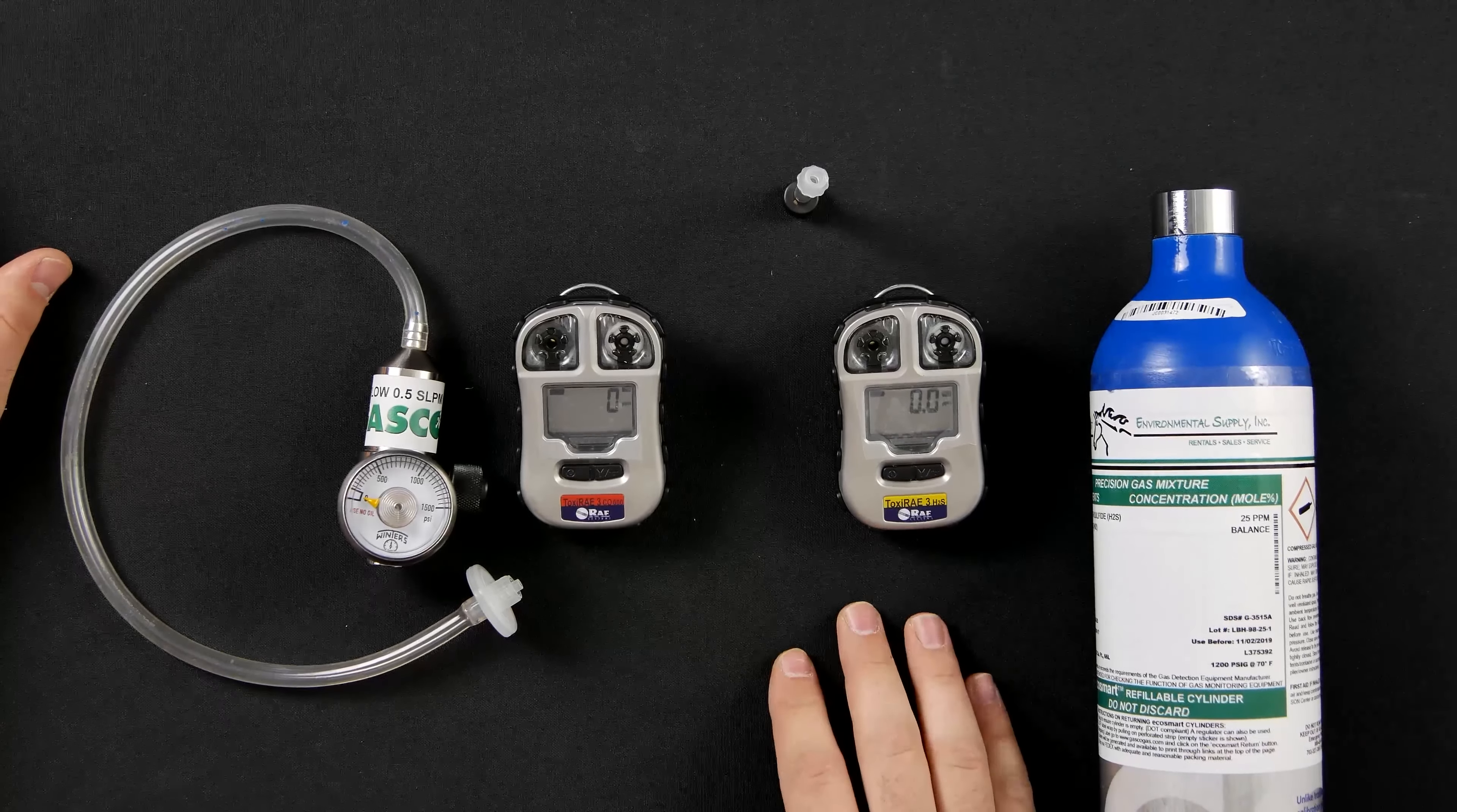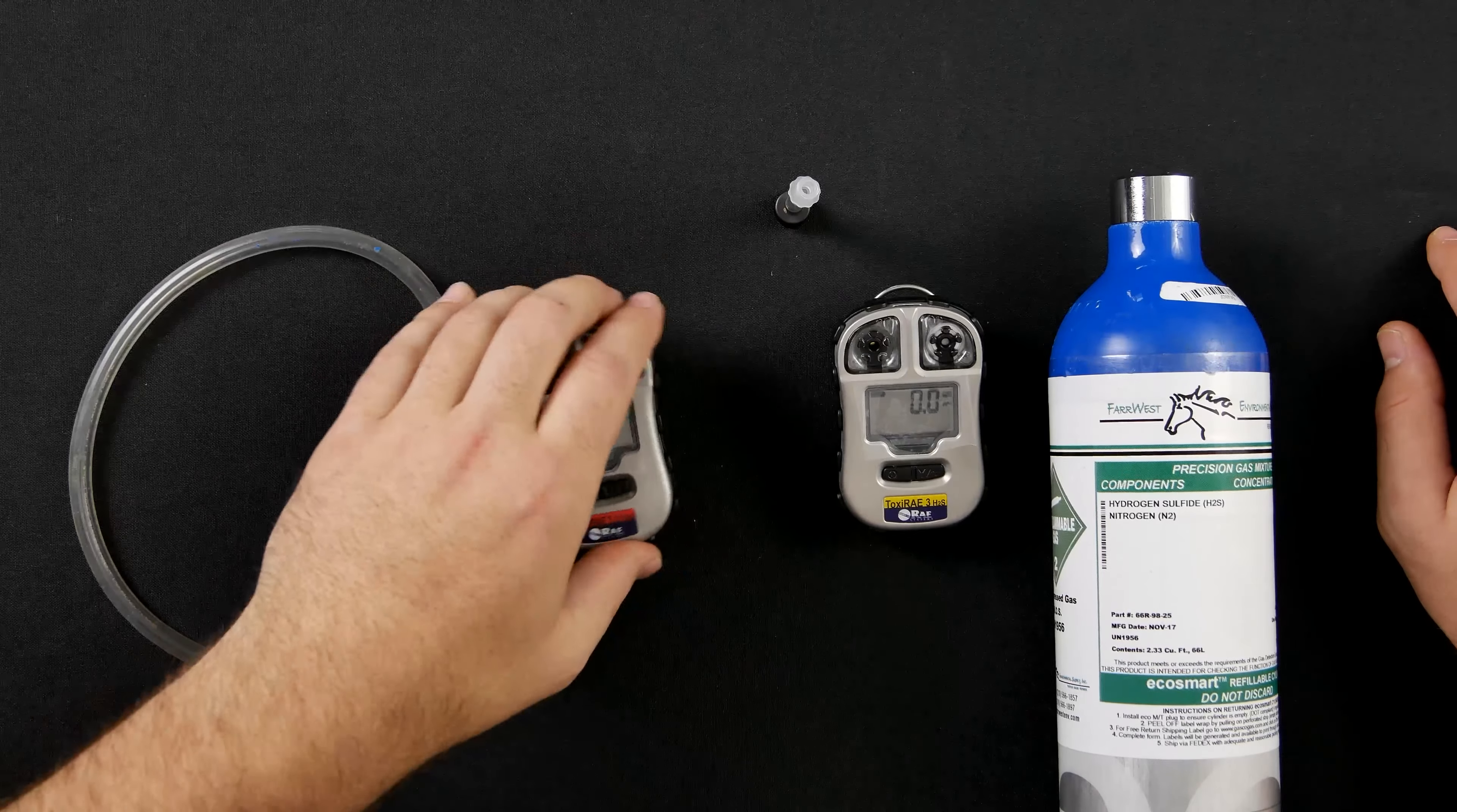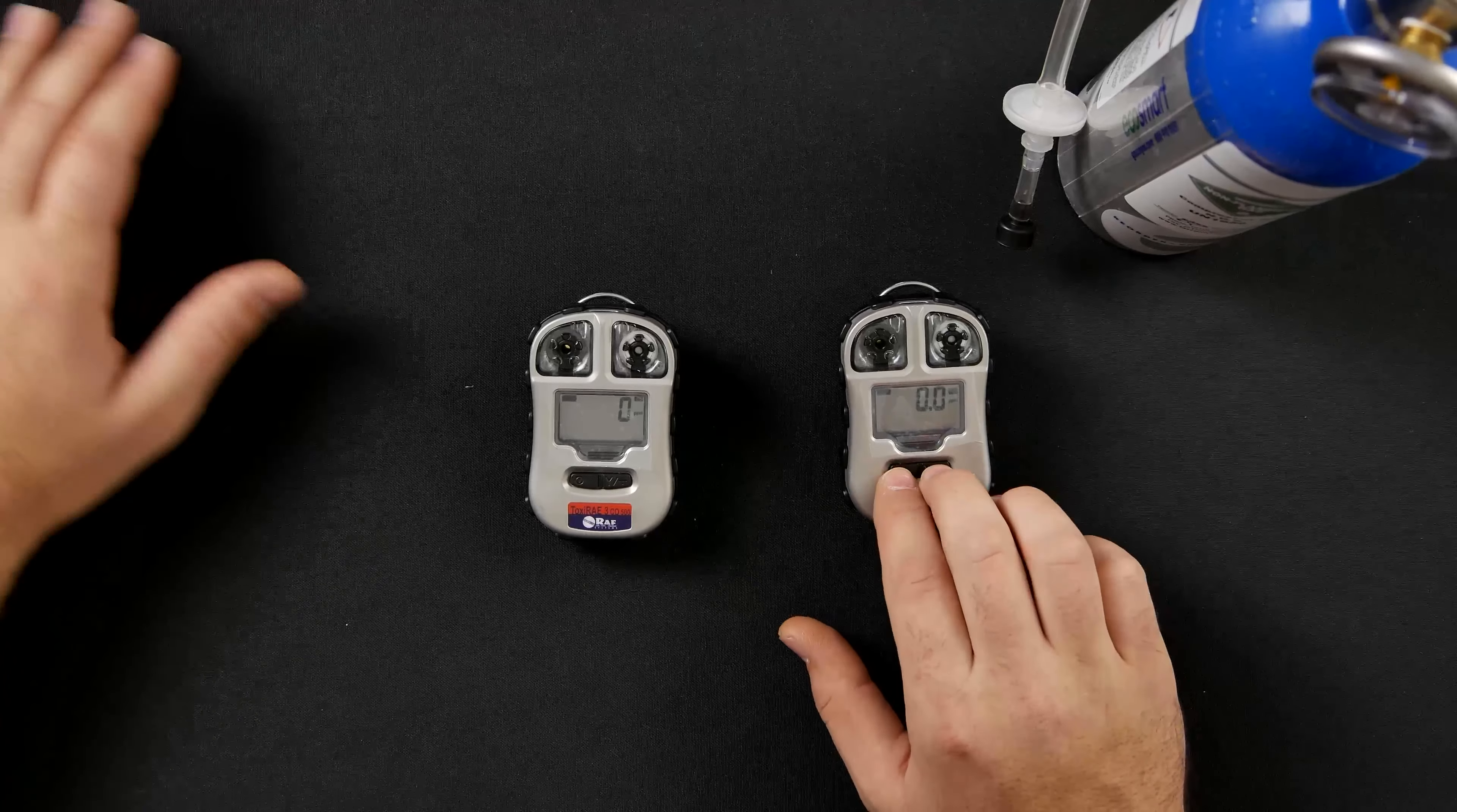To SPAN calibrate your Toxiray 3 H2S meter, you will need 25 parts per million of H2S. You will also need the 0.5 constant flow regulator that we use for the CO and the same adapter that we use for the CO. To SPAN calibrate the H2S meter, you will use the same steps that we did with the CO meter. You will hold down the mode and the Y plus button.